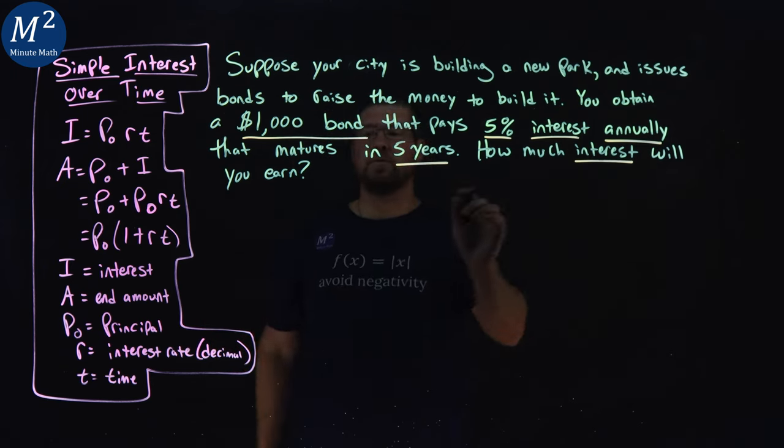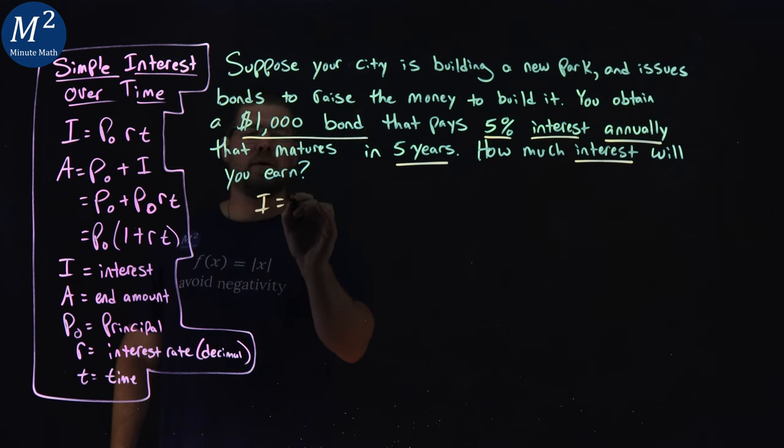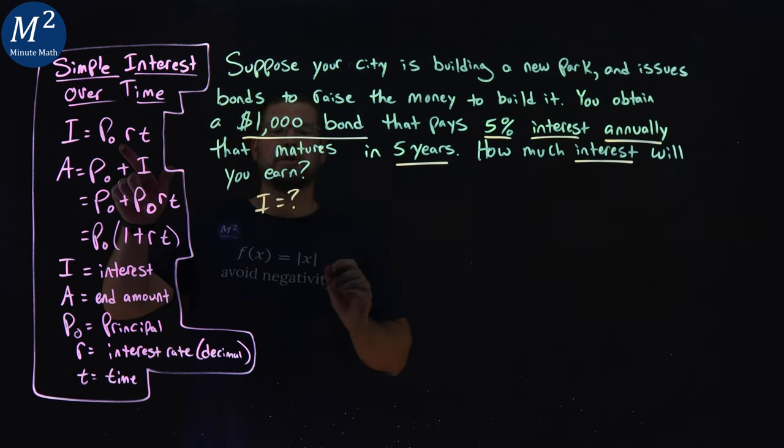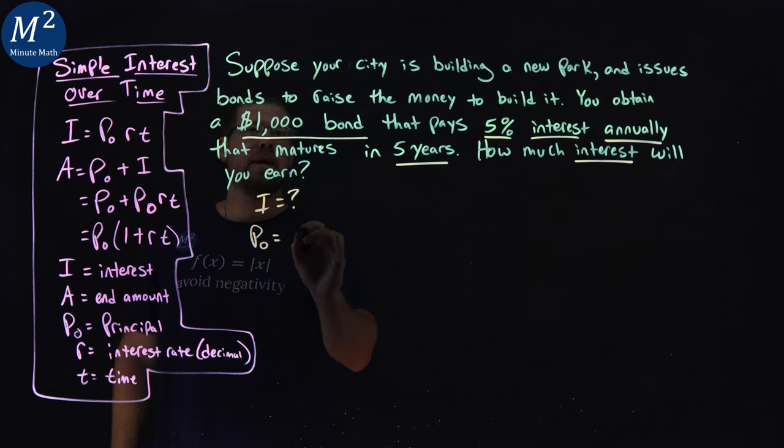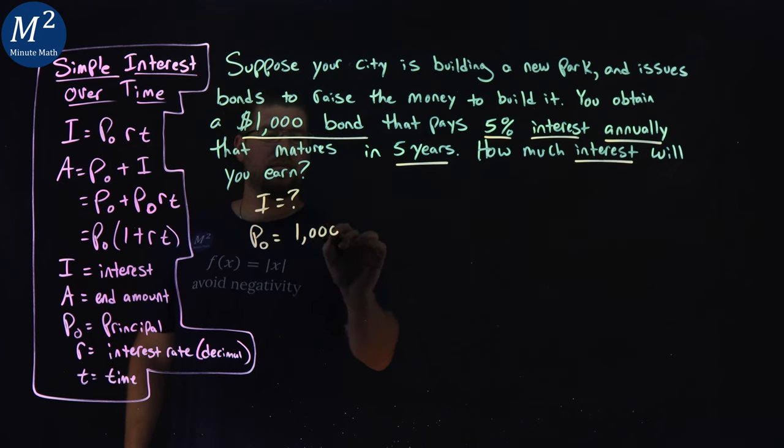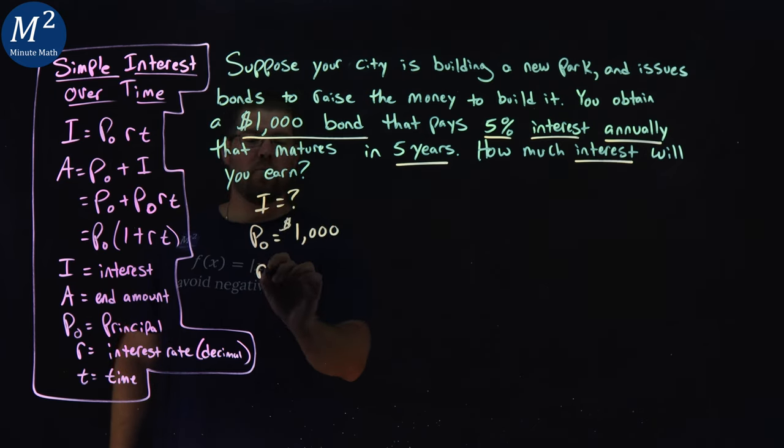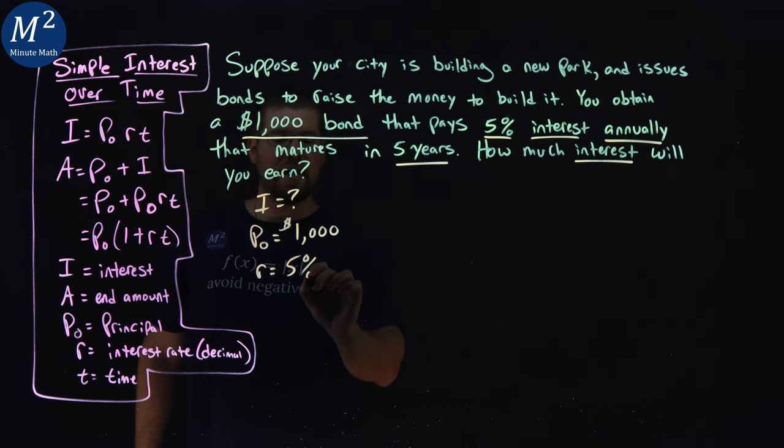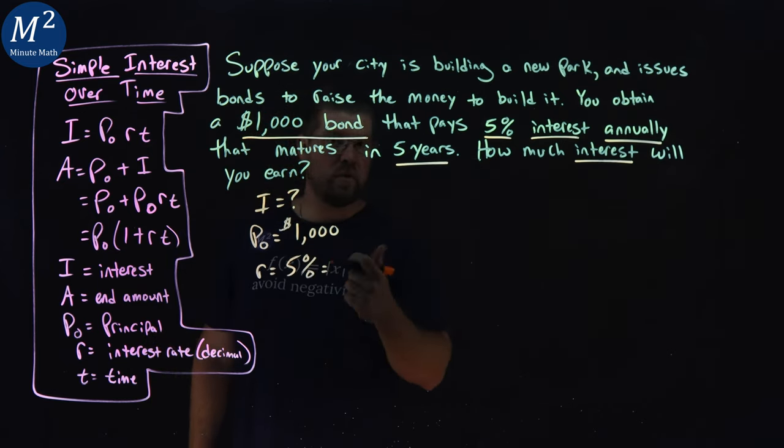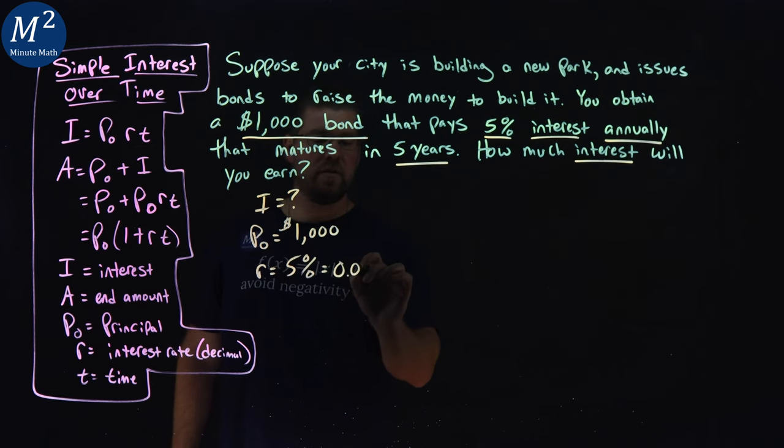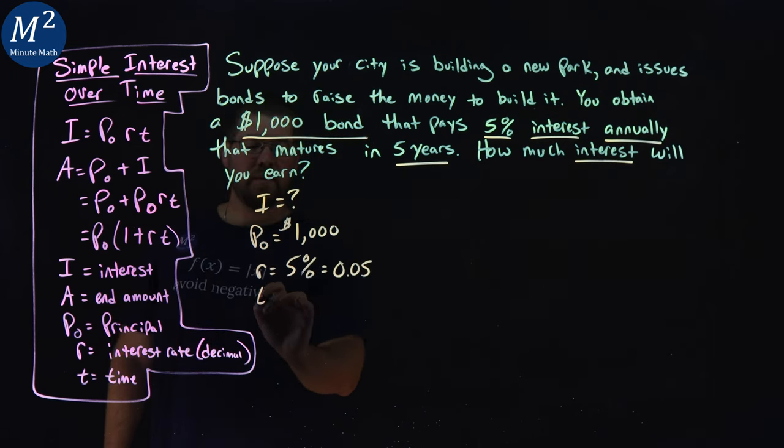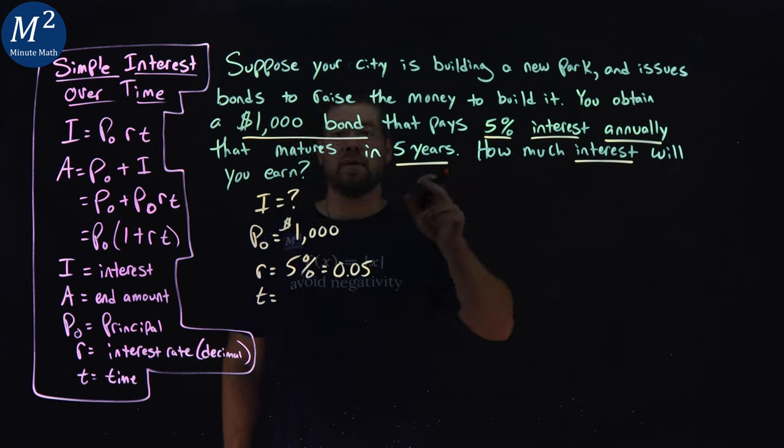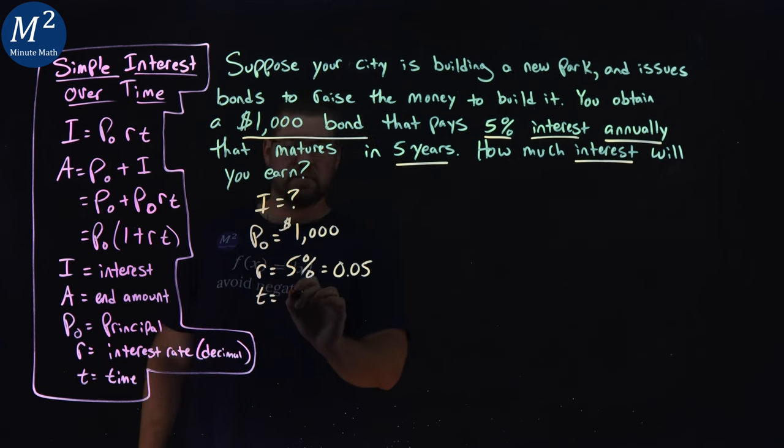We want to find how much interest we will earn. We don't know that. Our initial amount is $1,000. Our rate here is 5% interest rate, but as a decimal, we move the decimal place over two spots, 0.05. And our time here is yearly. We have five years.